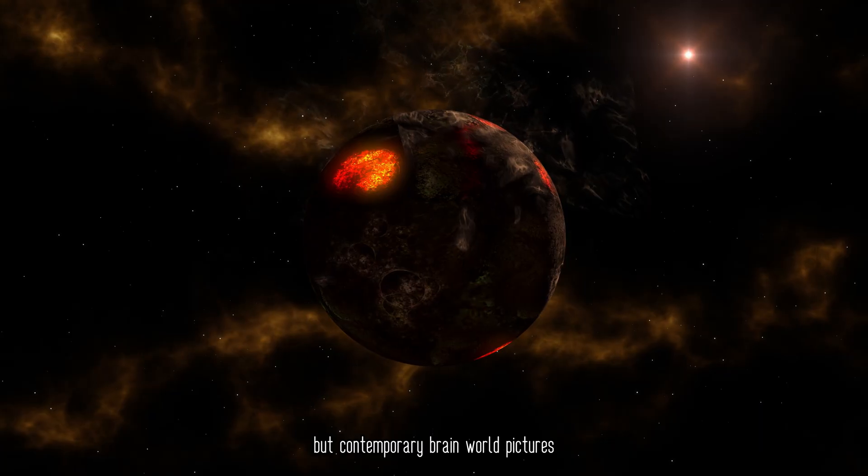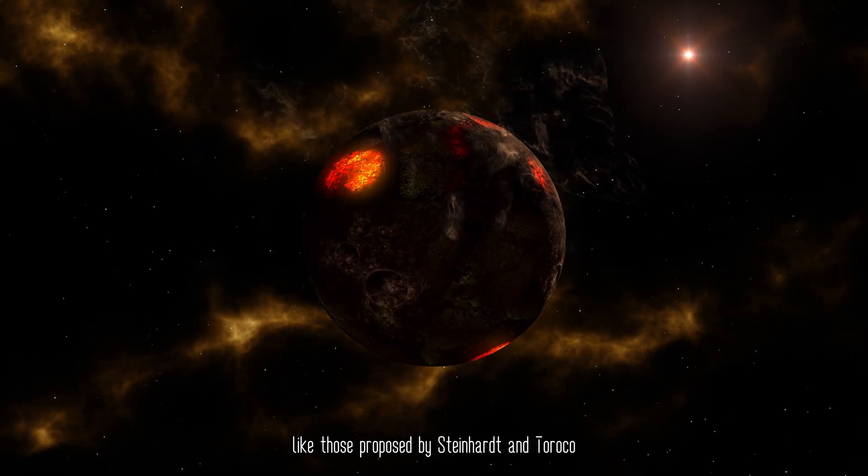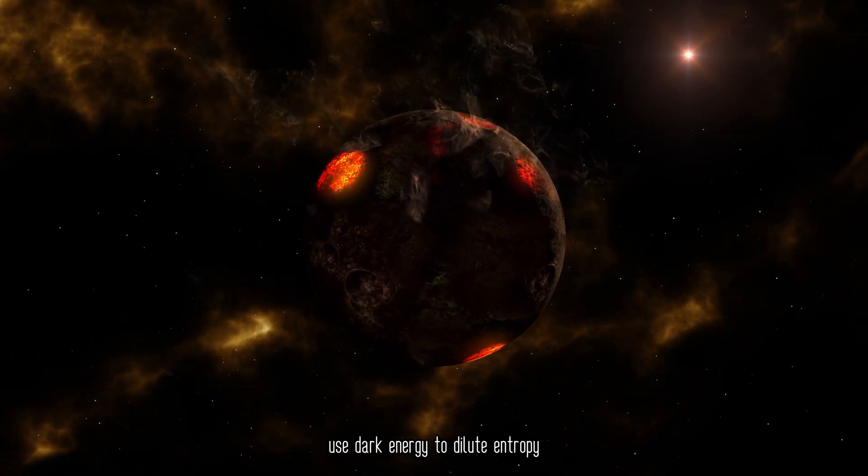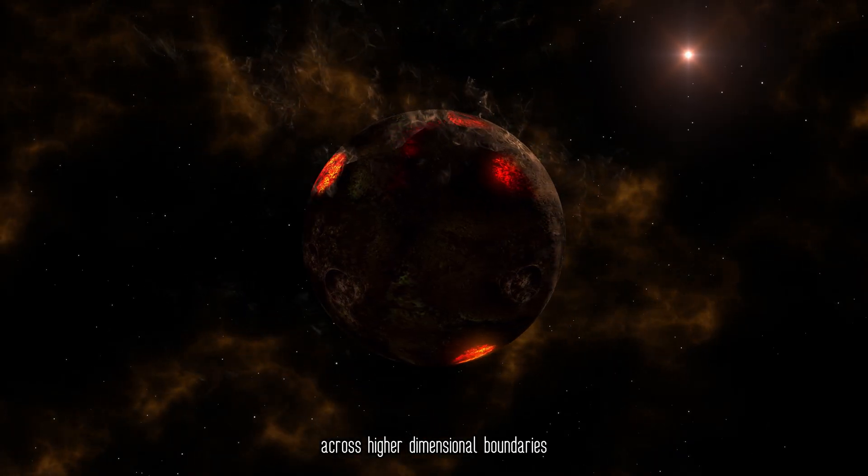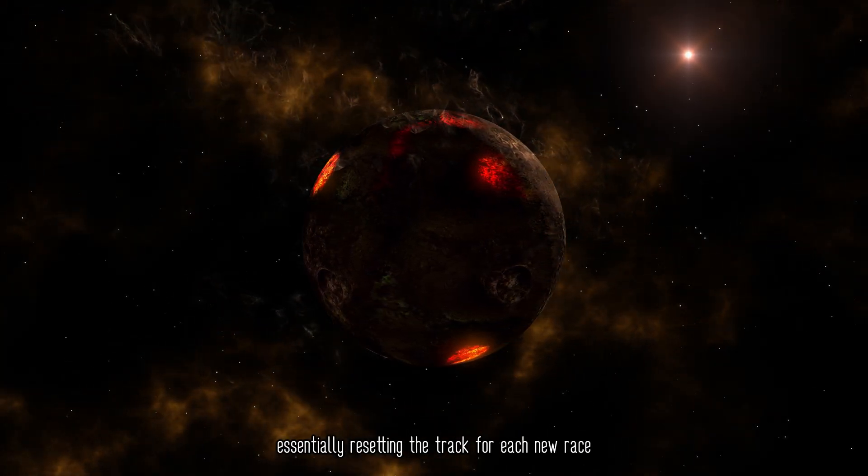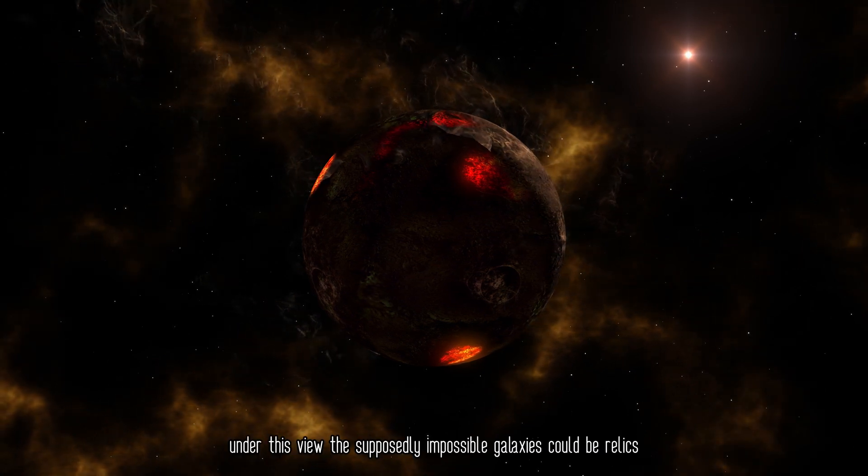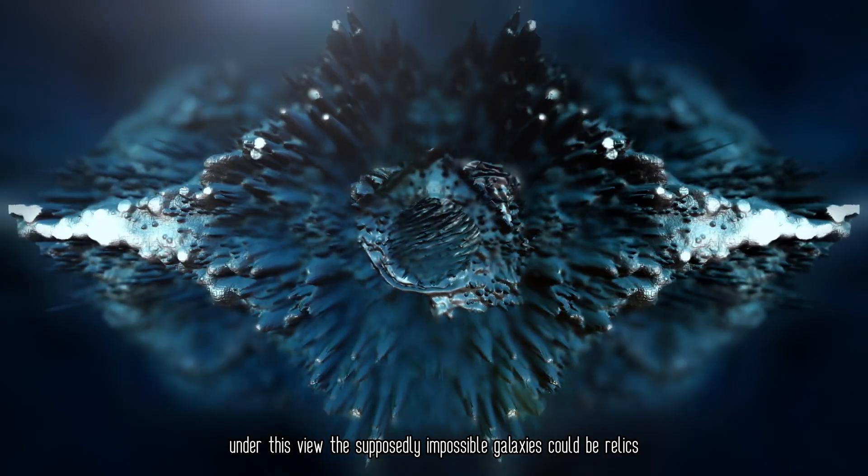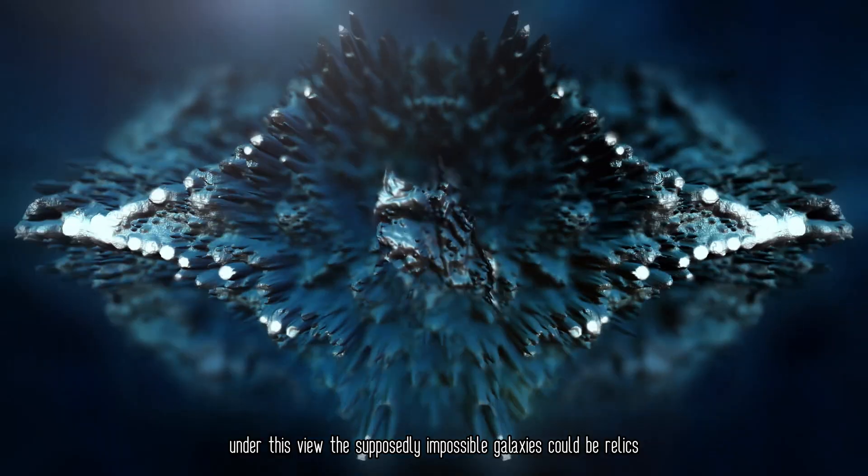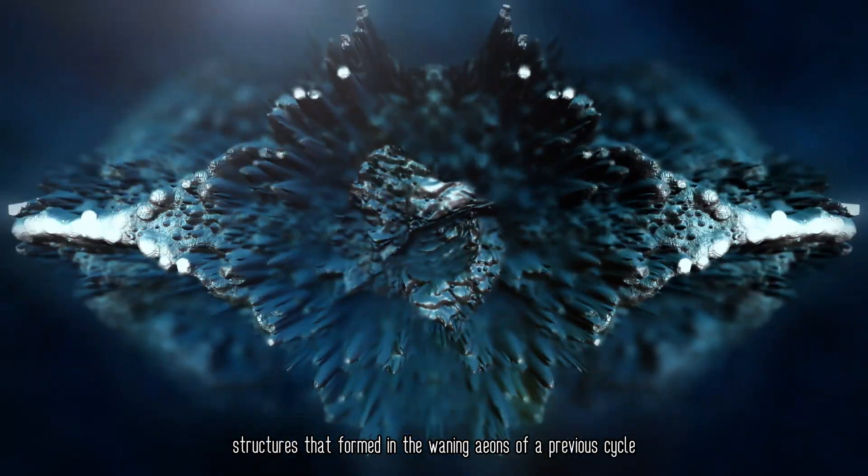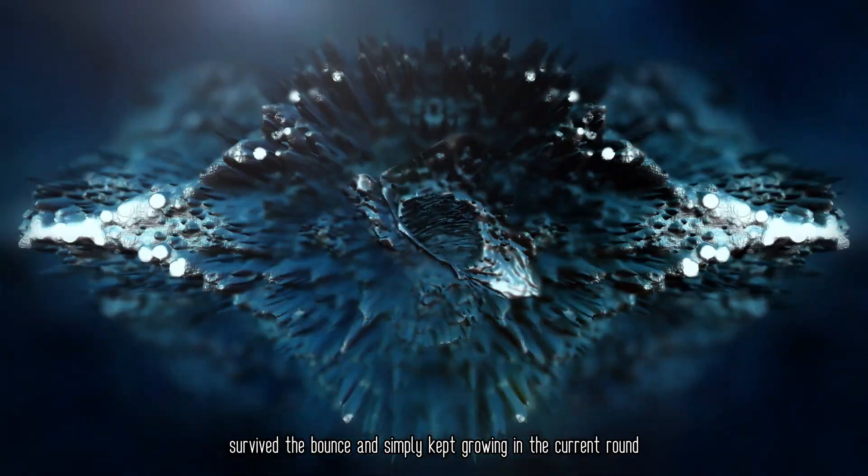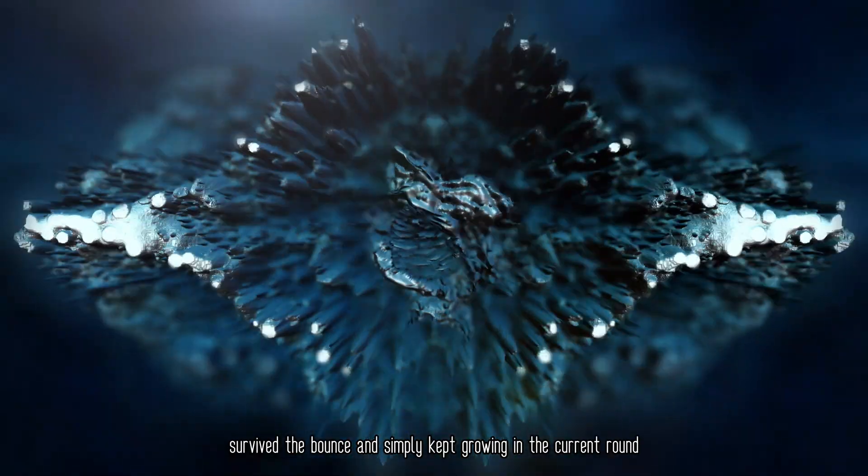But contemporary brane-world pictures, like those proposed by Steinhardt and Turok, use dark energy to dilute entropy across higher dimensional boundaries, essentially resetting the track for each new race. Under this view, the supposedly impossible galaxies could be relics—structures that formed in the waning eons of a previous cycle, survived the bounce, and simply kept growing in the current round.